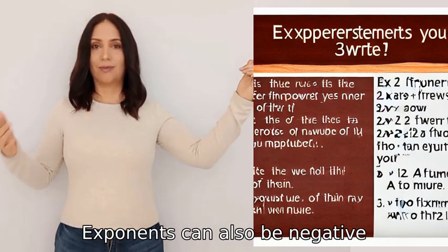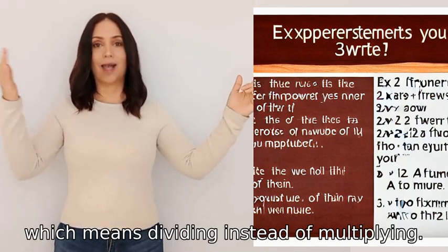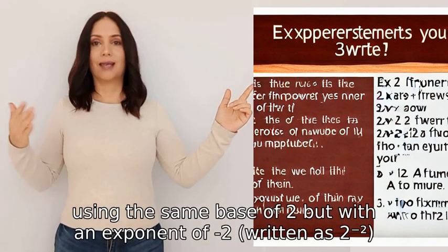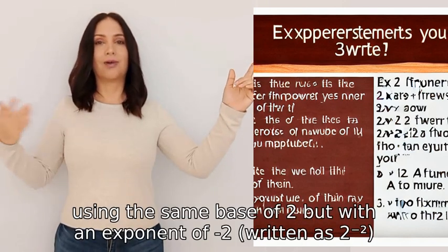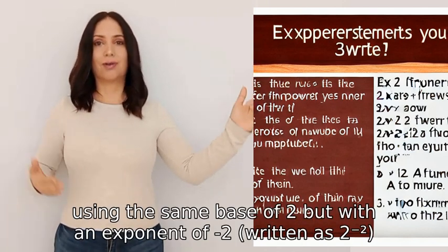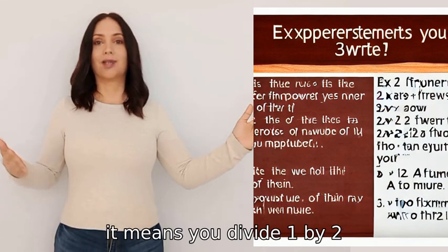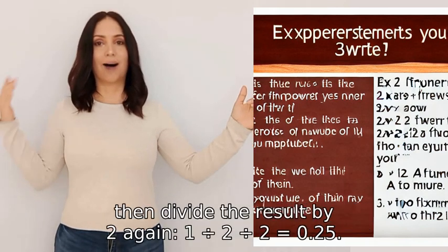Exponents can also be negative, which means dividing instead of multiplying. For instance, using the same base of 2 but with an exponent of -2 (written as 2⁻²), it means you divide 1 by 2, then divide the result